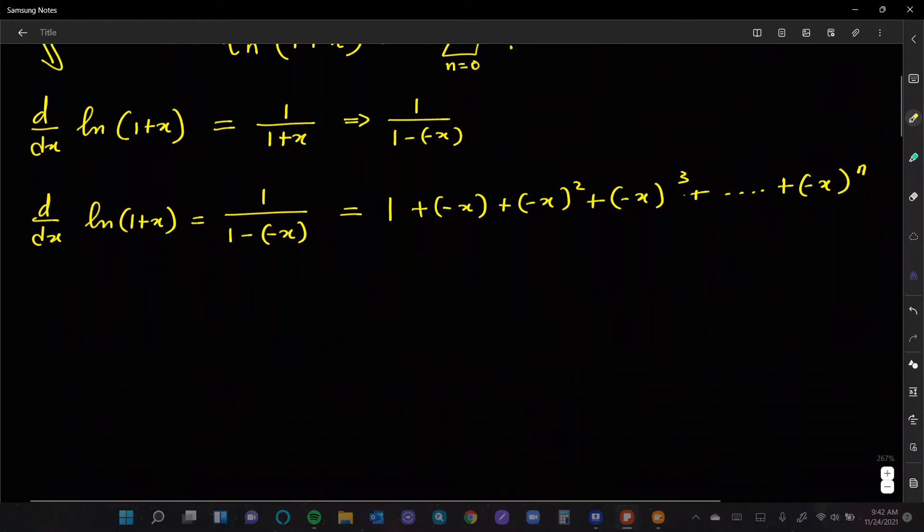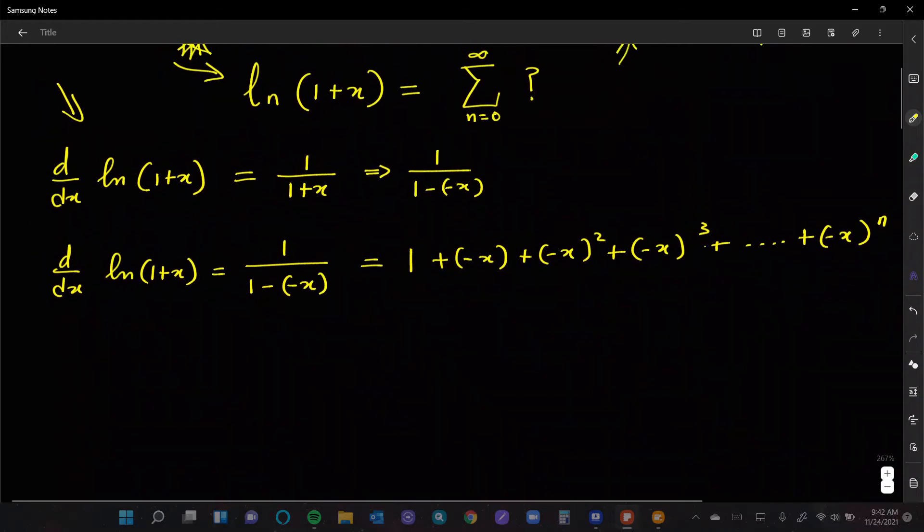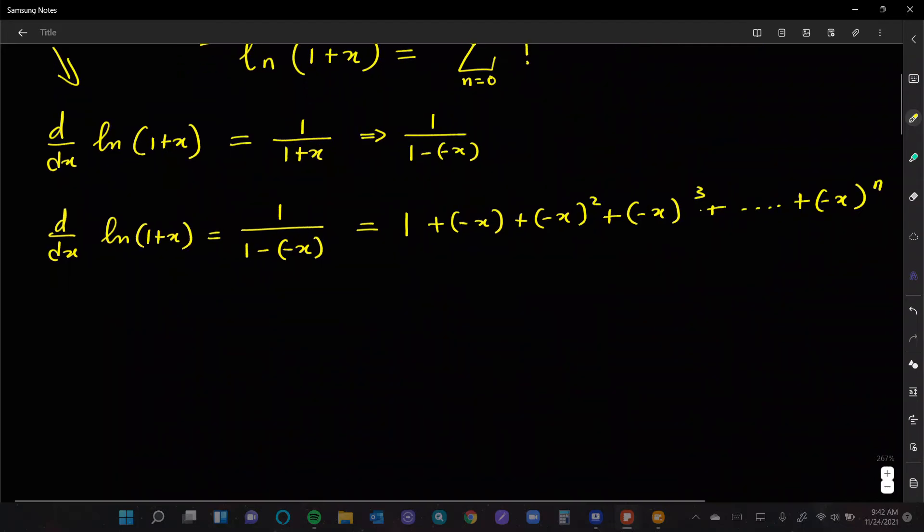At this point, what do we do to a derivative for us to get the function back? Well, we need to integrate. So we're just going to take the integral of both sides, which simply means we are integrating d/dx of the natural log of 1 plus x dx.